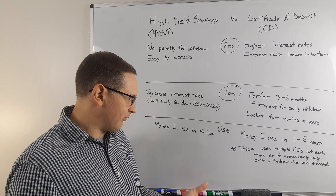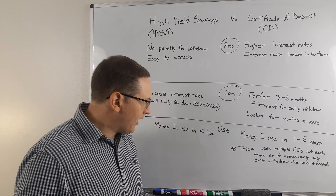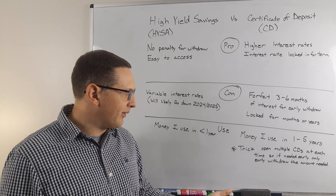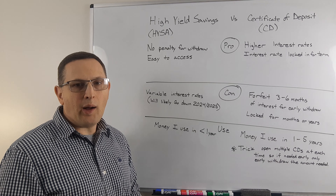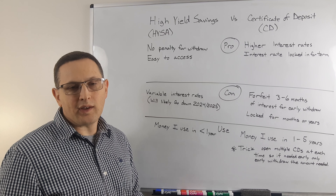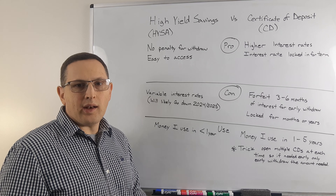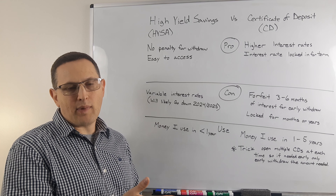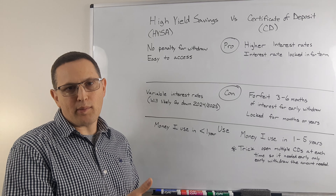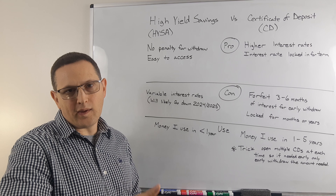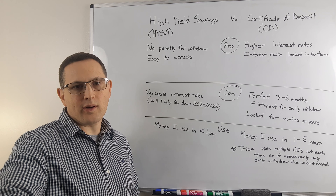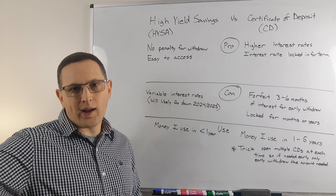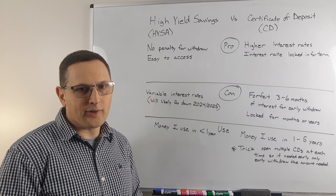I also look to invest most of my money in the stock market and real estate. Any money I don't need to use in the next one to five years, I'll put in CDs and build a CD ladder where I have maturities at maybe a year, 18 months, two years, two and a half years, all the way out to five years.